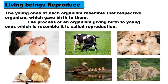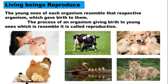Next point: living beings reproduce. The young ones of each organism resemble the respective organism which gave birth to them. The process of an organism giving birth to young ones which resemble it is called reproduction. Human beings, cows, and dogs give birth to young ones that resemble them. In the case of a hen, it first lays an egg, then hatches it and chicks come out. Ducks and lions also have babies. Living beings reproduce.